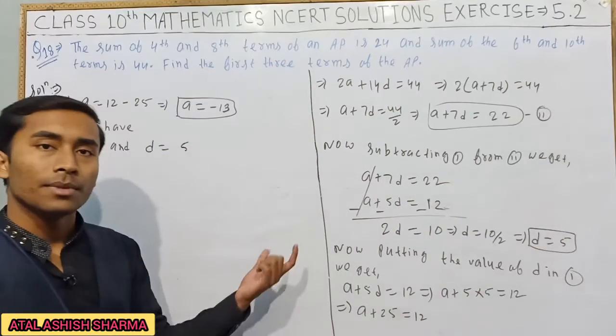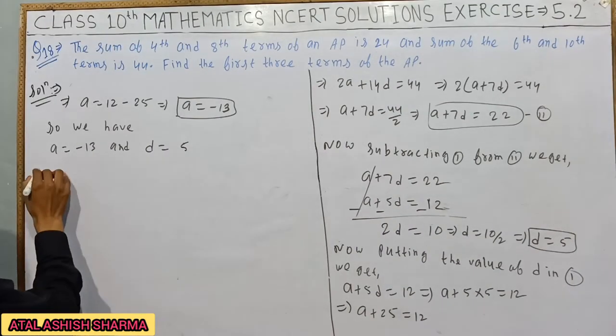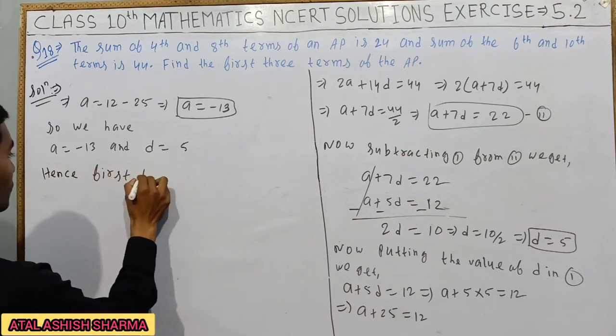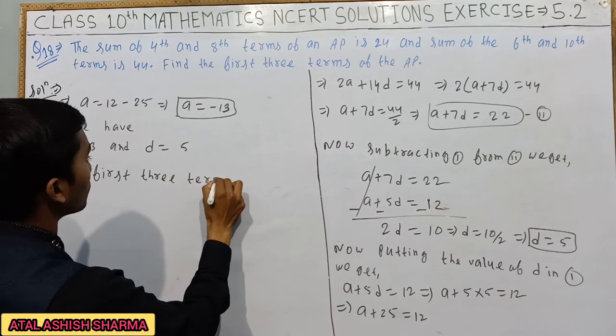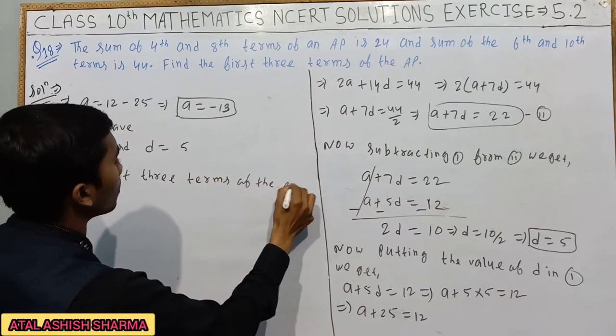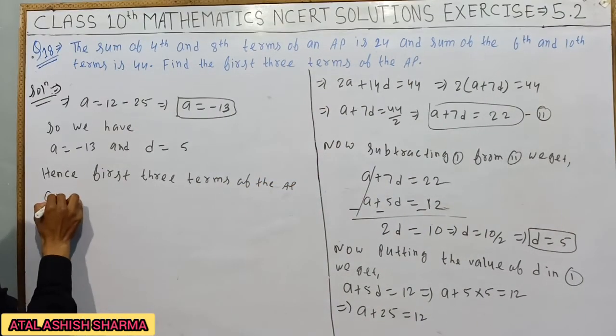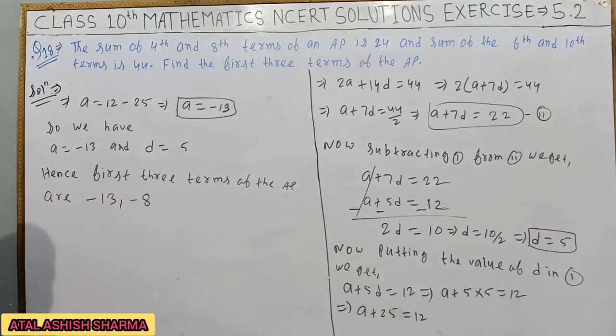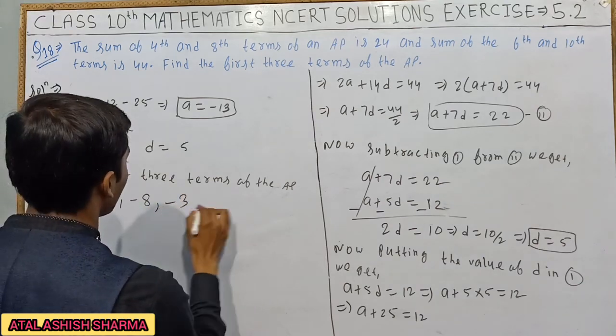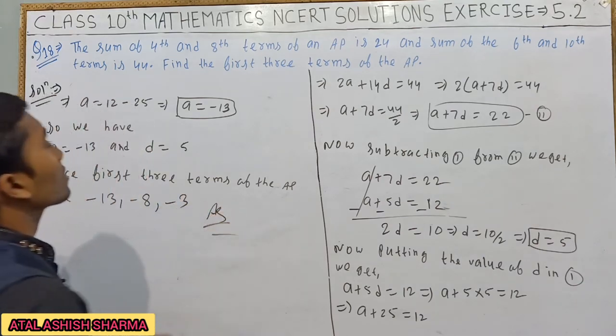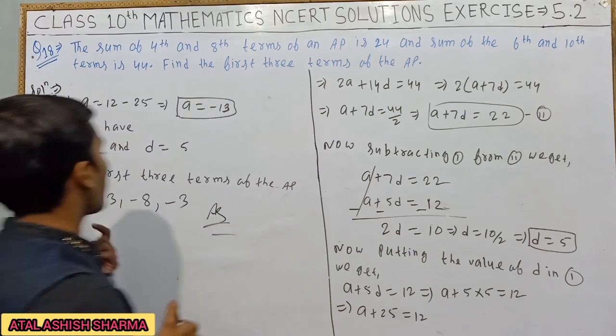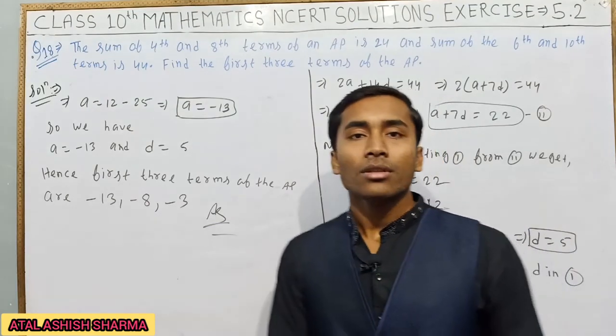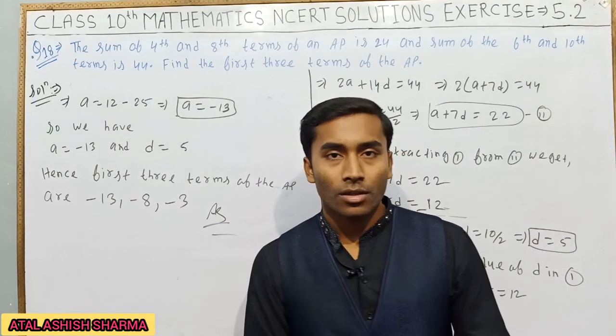Hence the first three terms of the AP are: a equals minus 13, a plus d equals minus 13 plus 5 equals minus 8, and a plus 2d equals minus 13 plus 10 equals minus 3. This is your answer: minus 13, minus 8, and minus 3. This is all about this question. Thank you very much and take care.